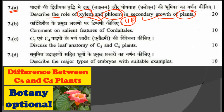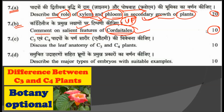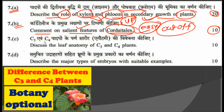There is a question about vascular tissues in plants, which is very important, relating to secondary growth. Another sub-question asks you to comment on salient features of quadrats. There is also a question discussing leaf anatomy of C3 and C4 plants — you will get the answer explaining how C3 and C4 plants differ anatomically.